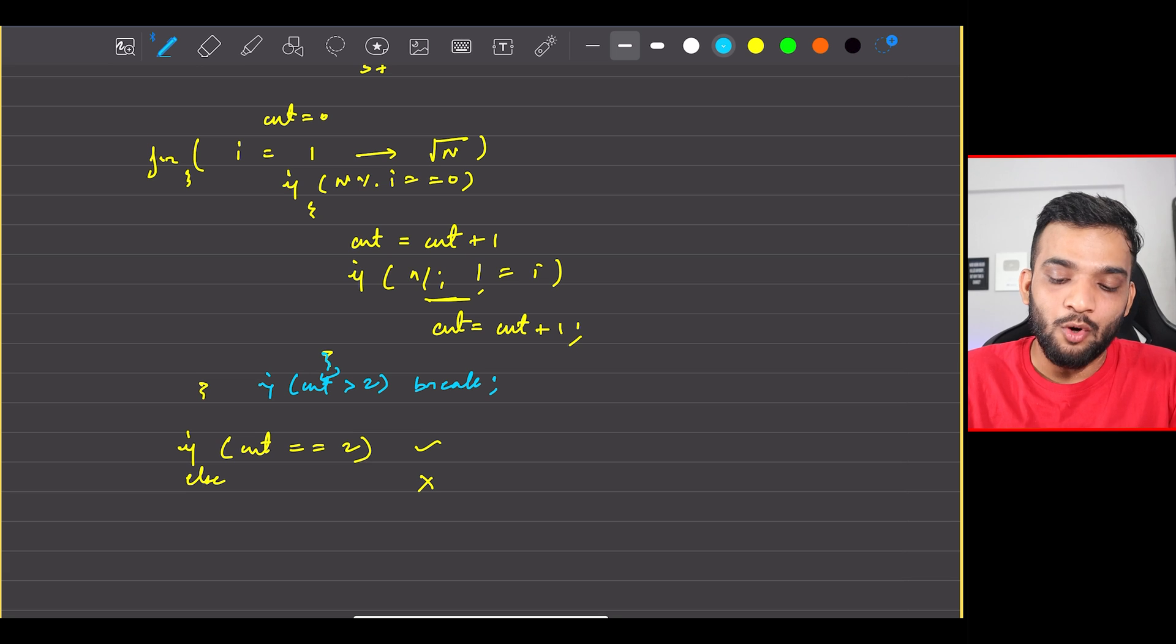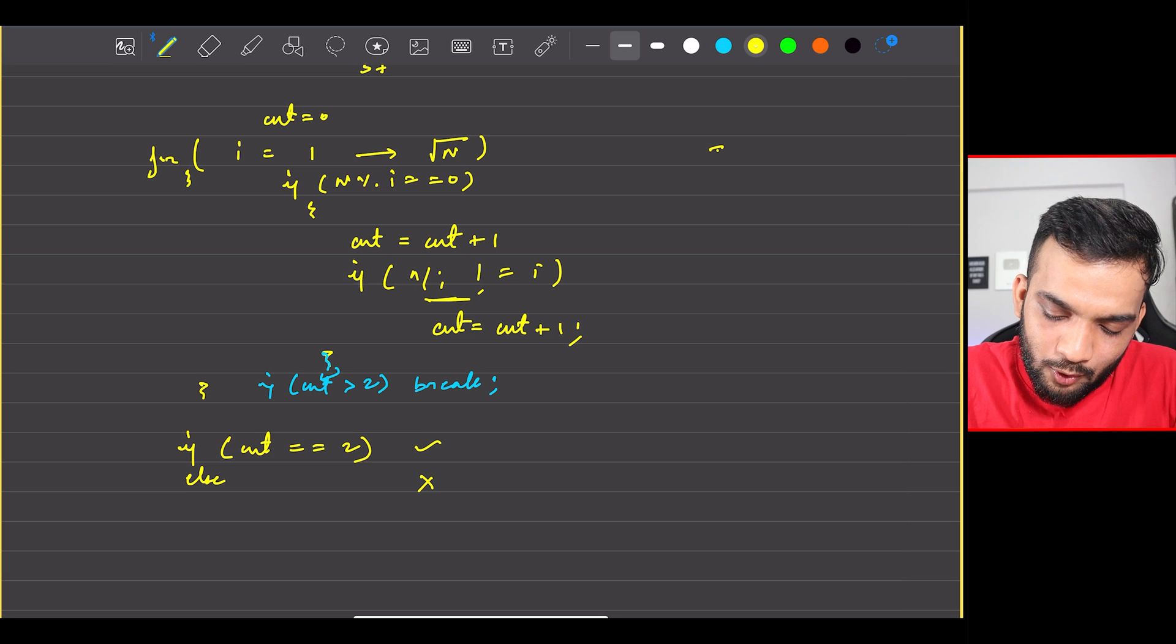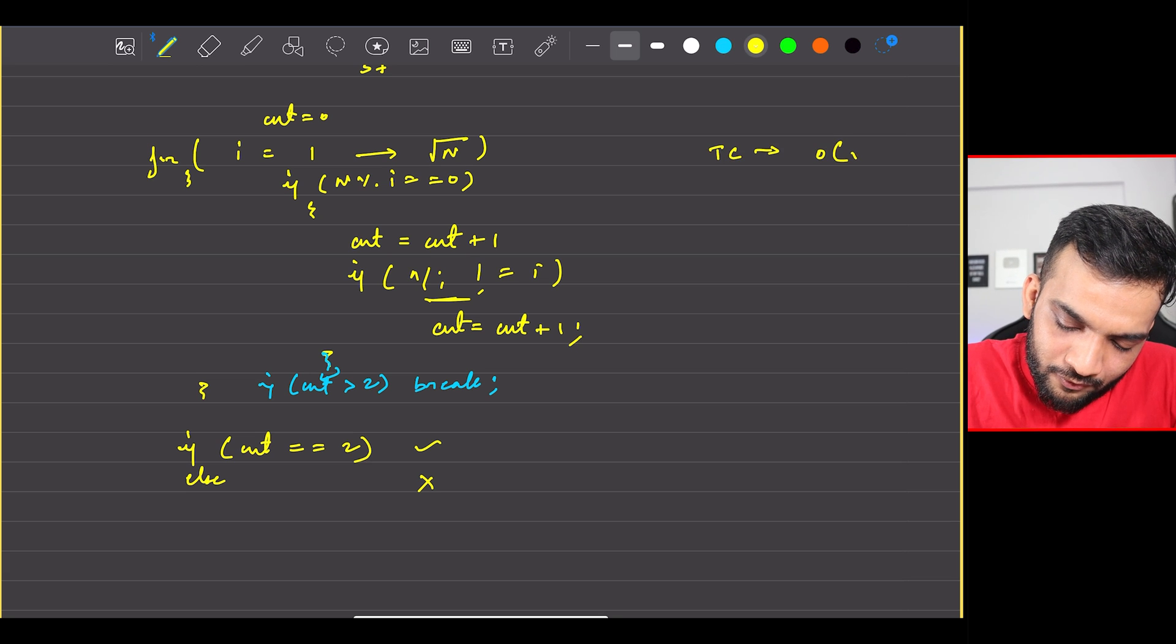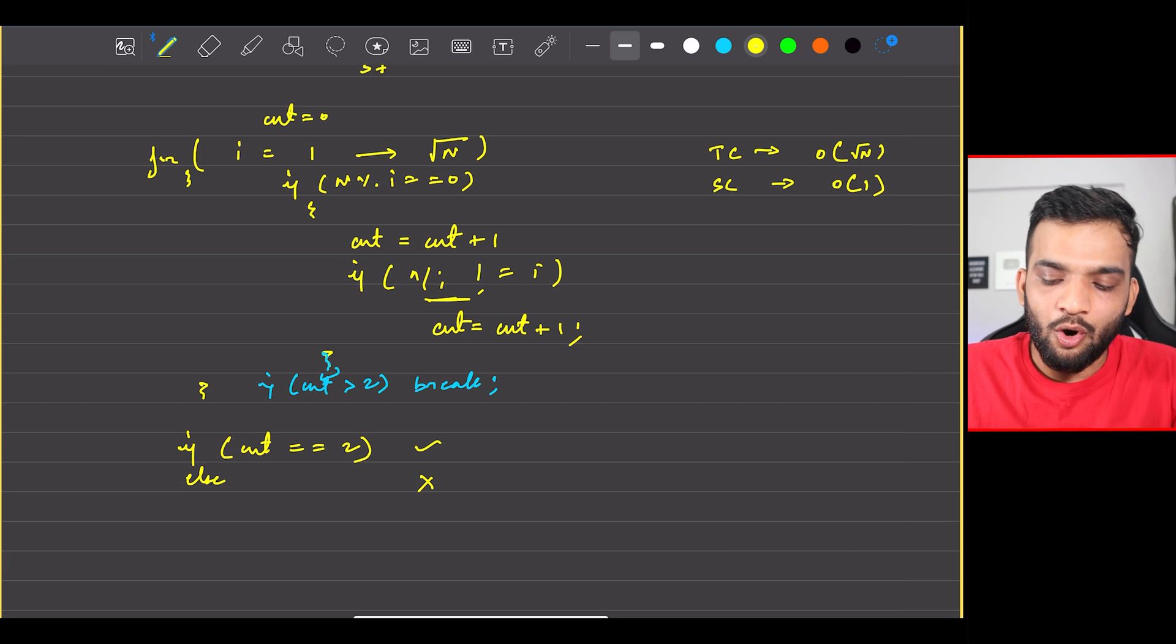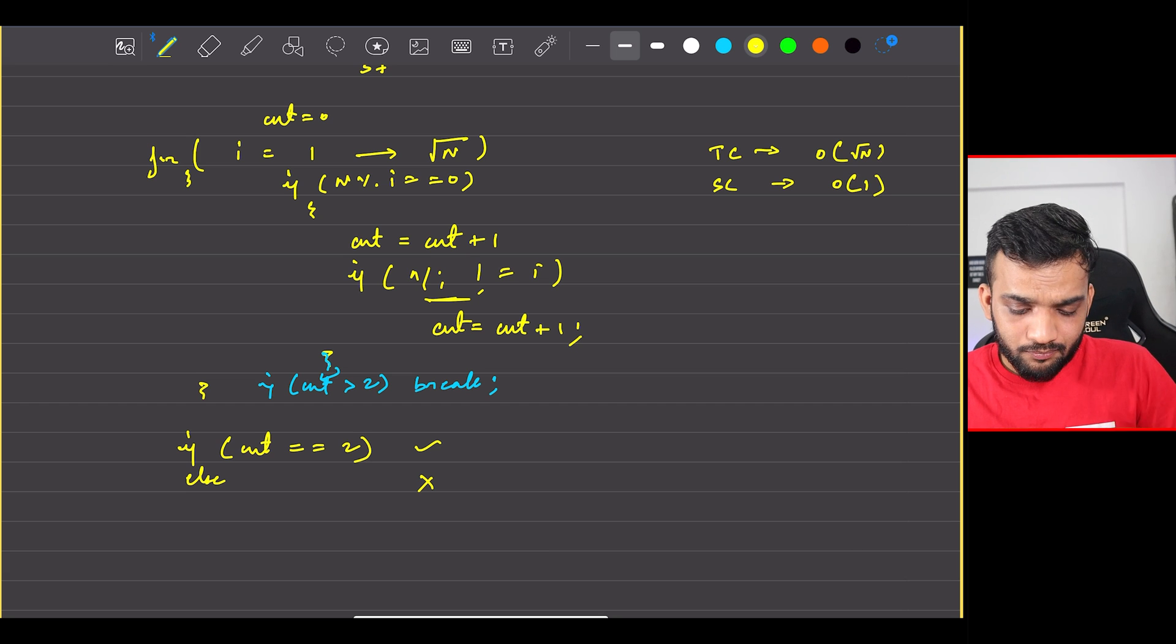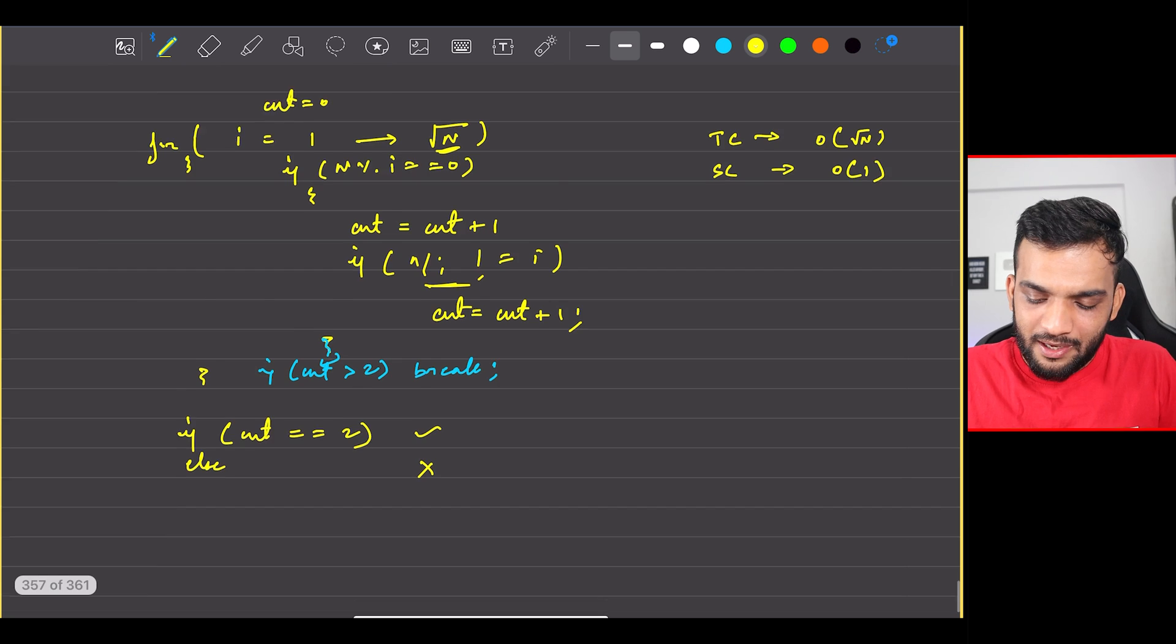What will be the time complexity? O(square root of n). What is the space complexity? O(1). This for loop can be simply written as for i equal to 1, i into i less than or equal to n, and i plus plus.